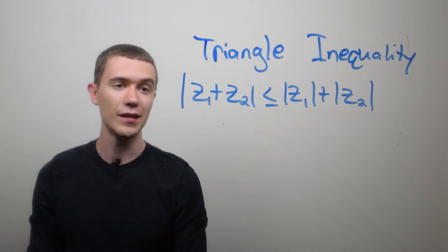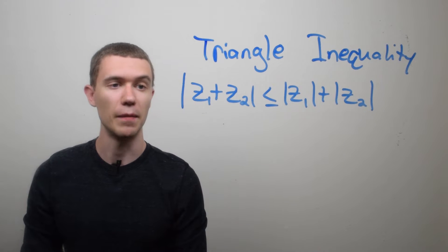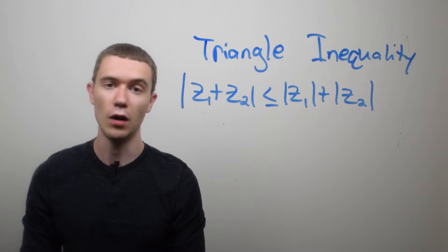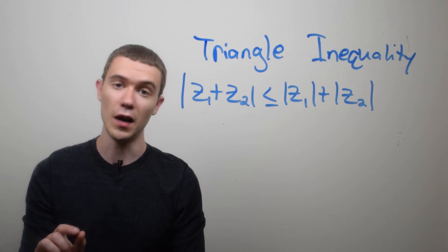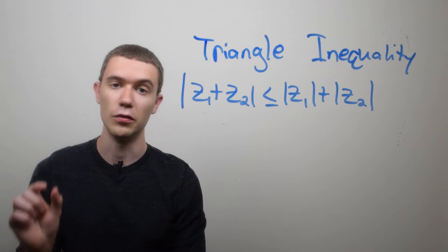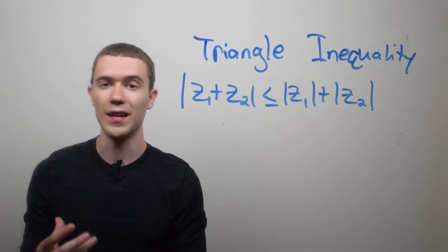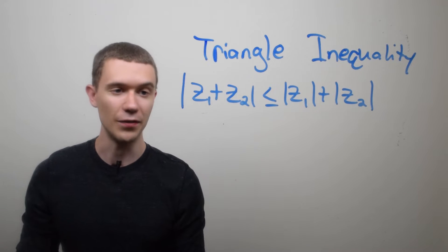And here it is, it's mostly straightforward. It says that the modulus of a sum of two complex numbers has to be less than or equal to the sum of the modulus of those individual numbers. And this sort of makes sense when you start thinking of these things as vectors.